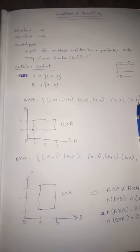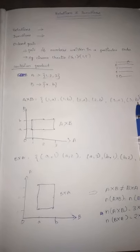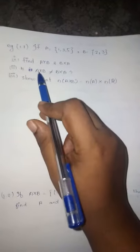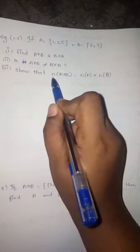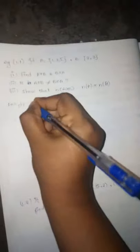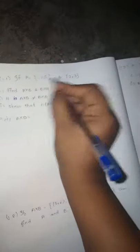This is the illustration. Now let's do examples. First example: If A = {1, 3, 5} and B = {2, 3}, find A×B and B×A. Show that A×B ≠ B×A. Show that N(A×B) = N(A) × N(B). There are 3 parts in the book.